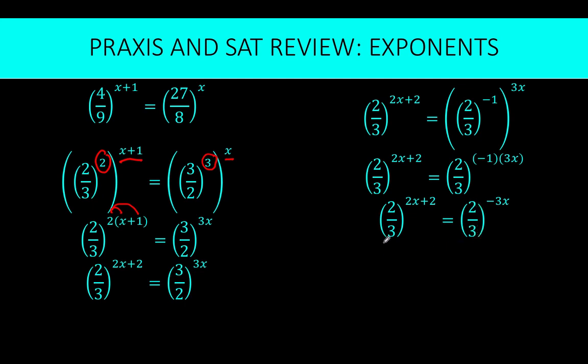So using now the one to one property of exponential function. If the bases are the same, it implies that the exponents also are equal. And so we arrive now at this linear equation, 2x plus 2 equals negative 3x.